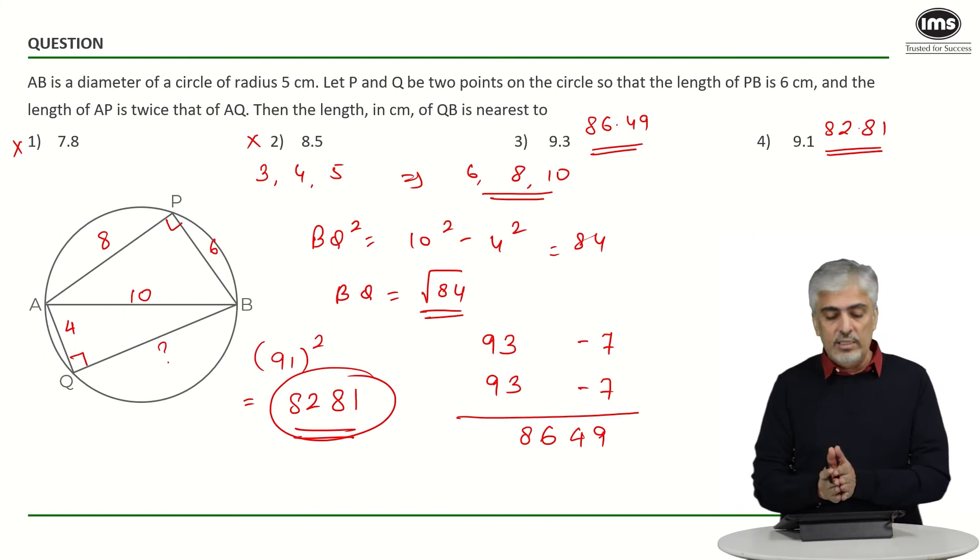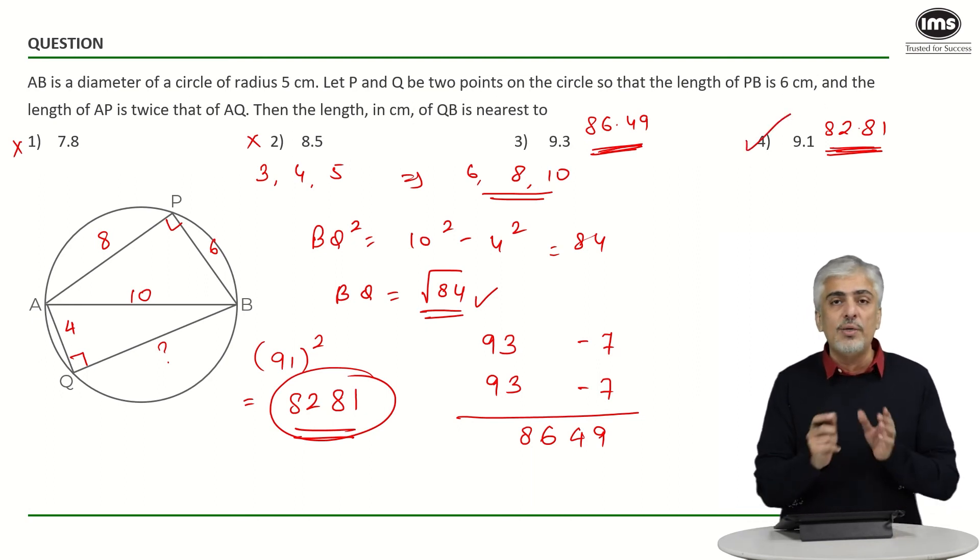Now which of them is closer to 84? If you look at this, this is hardly 1.2 away from 84 while this is 2.5 nearly away from 84. So obviously the answer is the fourth option. But yes, they were two pretty close options. It could have been a little bit tricky.